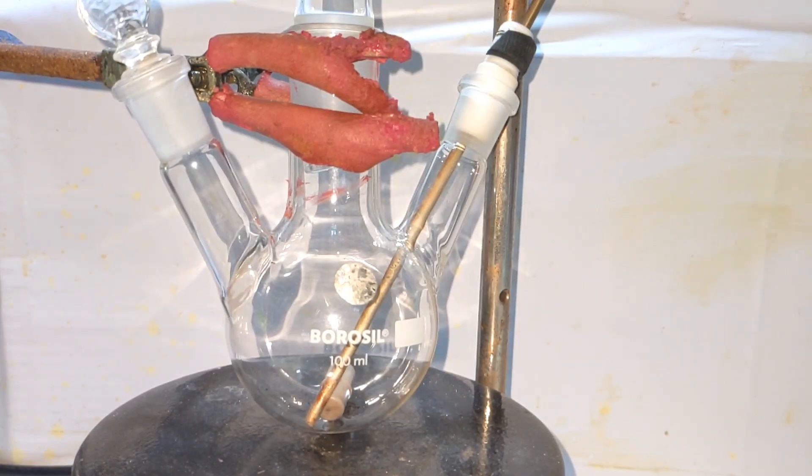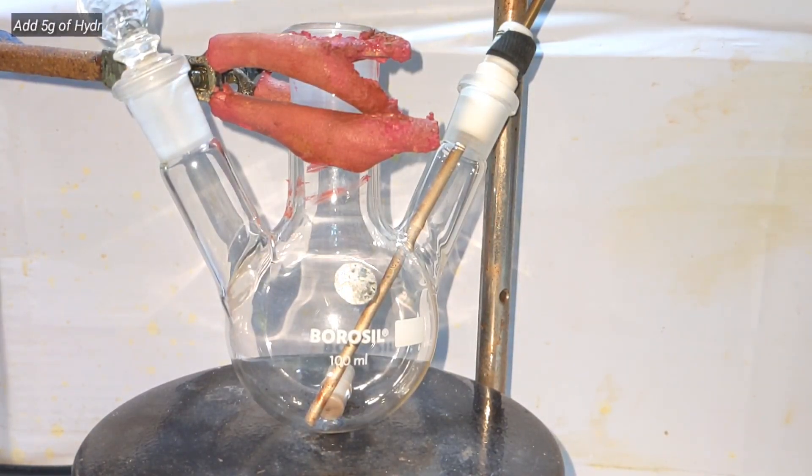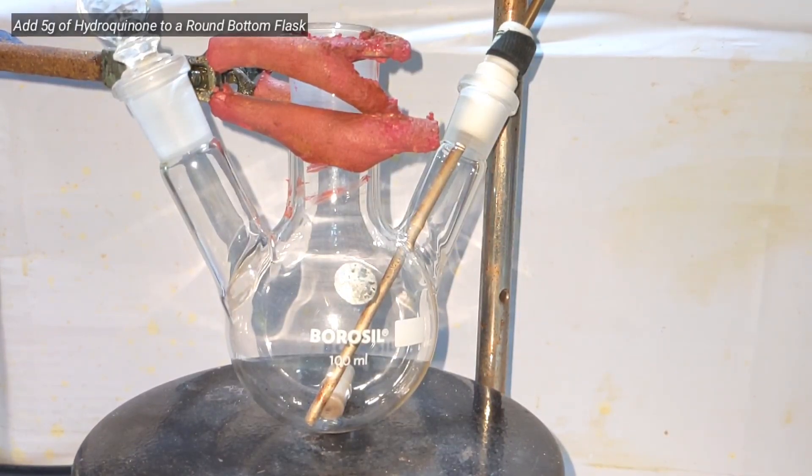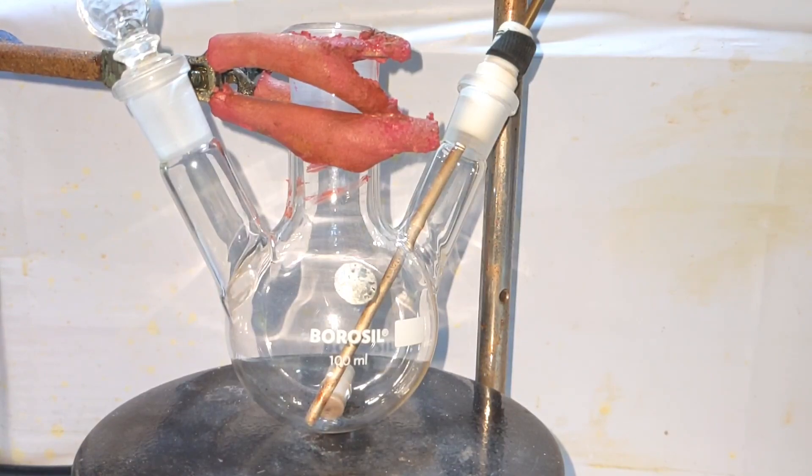Start by fixing a 100 milliliter three neck round bottom flask on a stand. One of the side necks is closed and the other side neck has a thermometer adapter with a temperature probe of the hot plate going inside.